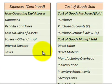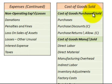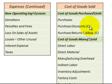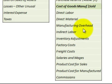Moving over to cost of goods sold, broken down by cost of goods purchased and sold for retail operations. Again, items marked with a little 'C' are contra accounts. Then we have cost of goods manufactured with those items broken down as well.